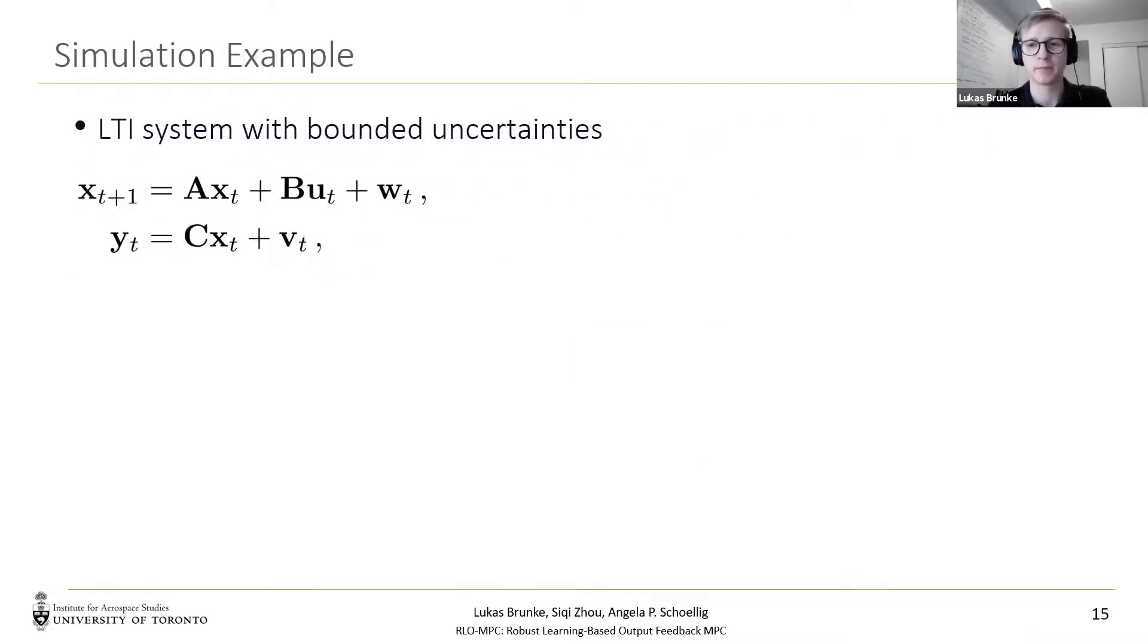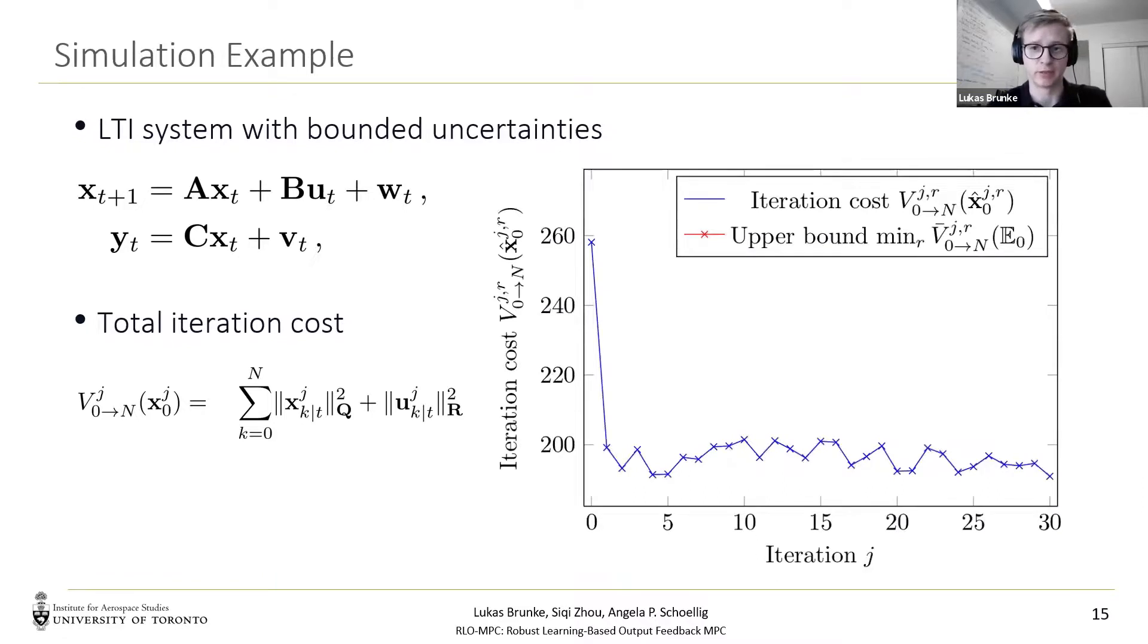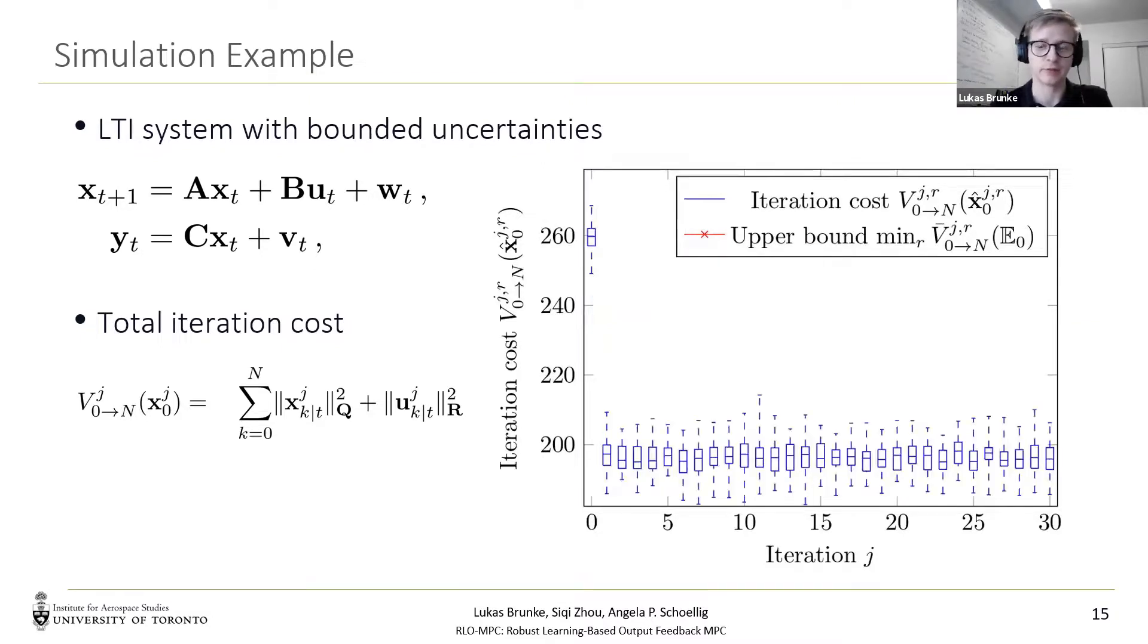In simulation for an uncertain LTI system, we can show the performance of the controller. Here we have the total iteration cost shown on the left, and we can now have the iteration cost over 30 different iterations for one run of the controller. And running the controller for the first time, we see that there is an improvement initially, but then the improvement oscillates. And we can do this multiple times, and we see that there is still variation. And after doing this for 50 independent runs, we see the variability of the iteration cost due to the varying initial state estimates. Now we can also plot our derived bound here in red, and this shows that the upper bound monotonically decreases, such that the worst case performance is always bounded but improves over time.